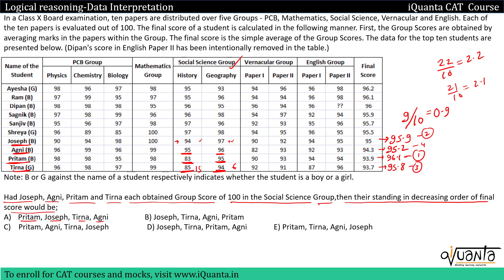Checking their standing in decreasing order of final score: highest belongs to Pritam (rank 1), then Joseph, then Tirna, then Agni (rank 4). So option B and D are eliminated since Pritam is first. The lowest is Agni at rank 4, eliminating further options — only option A remains. This was easy. I hope the explanation was understood. If you still have a doubt, please comment. Thank you.